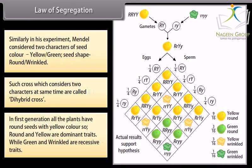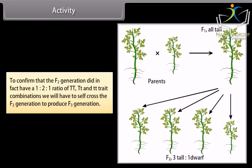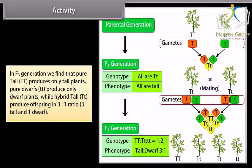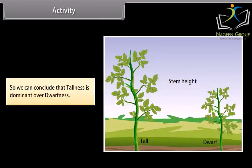In the first generation, all the plants had round seeds with yellow color. So, round and yellow are dominant traits, while green and wrinkled are recessive traits. Activity: to confirm that the F2 generation did in fact have a 1:2:1 ratio of TT, Tt, and tt trait combinations, we will self-cross the F2 generation to produce the F3 generation. In F3 generation, pure tall (TT) produces only tall plants, pure dwarf (tt) produces only dwarf plants, while hybrid tall (Tt) produces offspring in a 3:1 ratio — 3 tall and 1 dwarf. We can conclude that tallness is dominant over dwarfness.